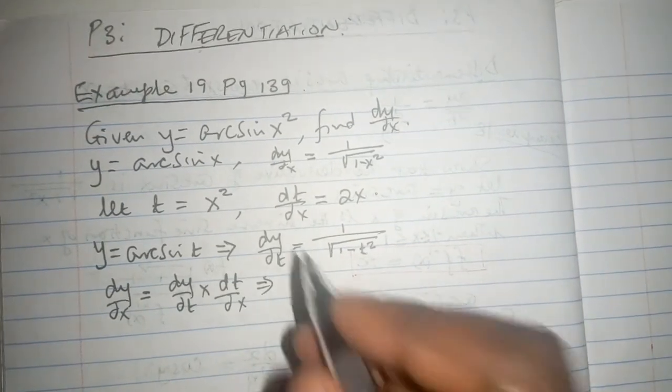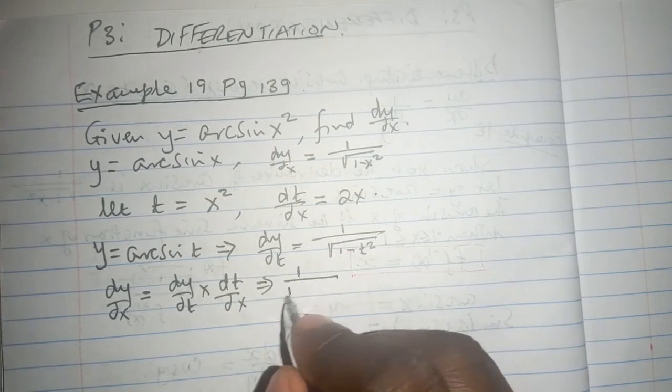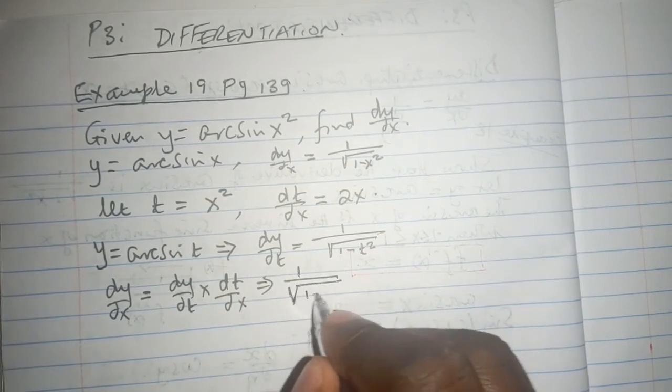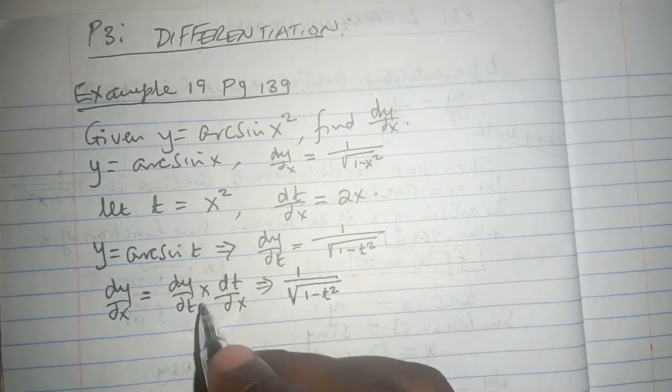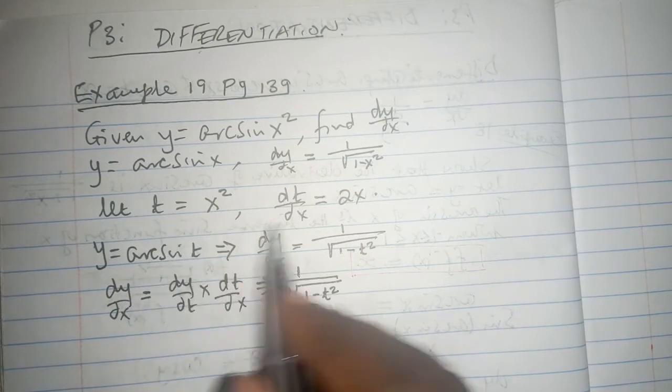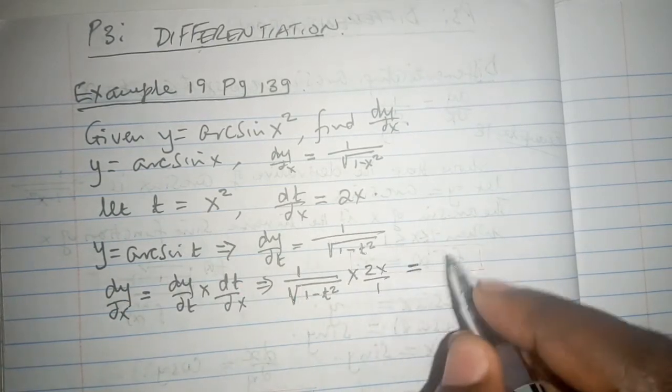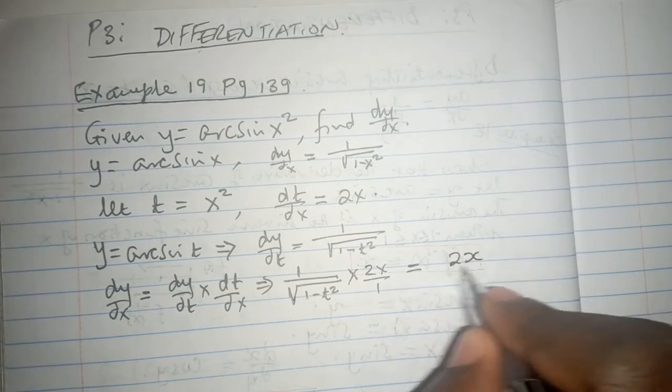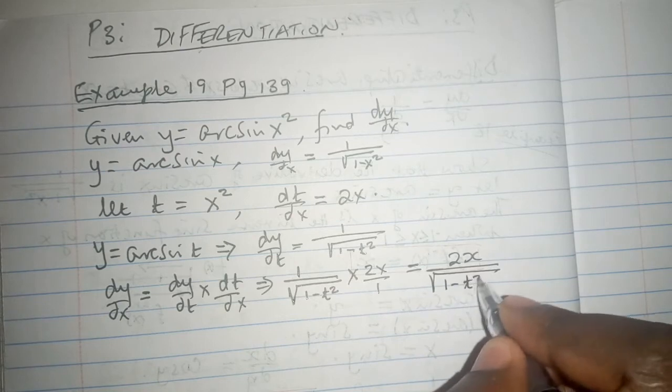So what is dy/dt? Our dy/dt is 1 over the root of 1 minus t squared, multiplied by dt/dx, which is 2x. Times 2x over 1, which is basically 2x all over the root of 1 minus t squared.